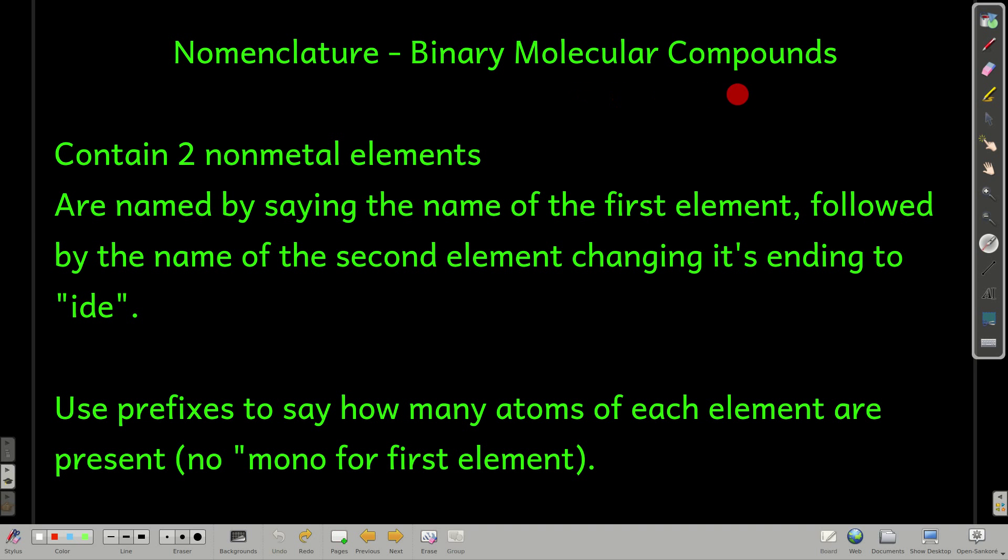Let's start with binary molecular compounds. Binary means there are two elements. Molecular means both of those elements are non-metals, so to the right of the staircase. To name them, you say the name of the first element and then say the name of the second element and change the ending of the name of the second element to ide, just like you do for monatomic anions. They're not anions though.